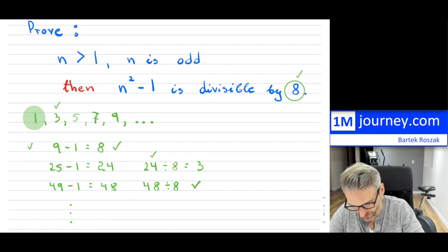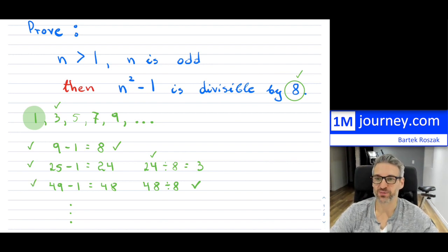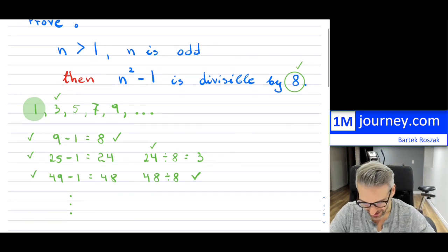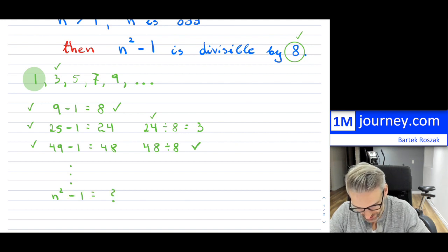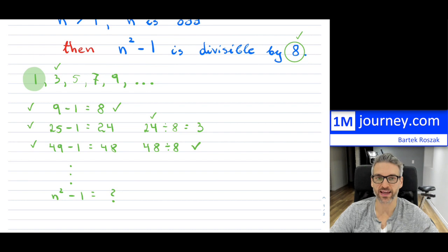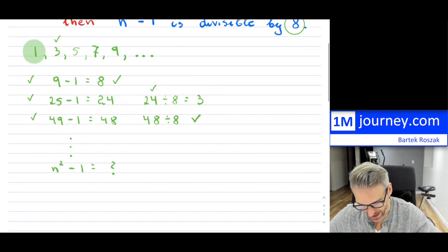So proving for 3, 5, and 7, we have just done that. But this is asking us for the general case. So n is somewhere down the line maybe, or it can be any of these. And now the question is, is this going to be divisible by 8? So the first thing that I actually notice...